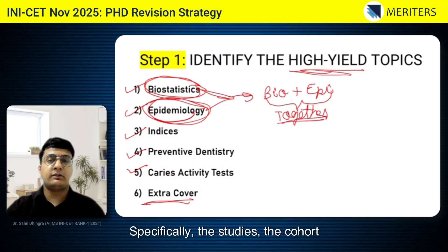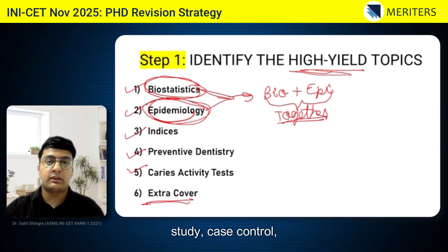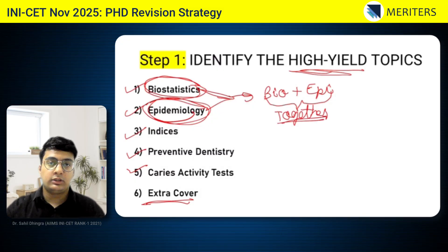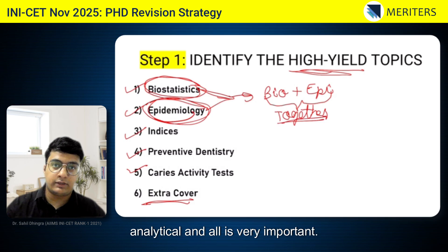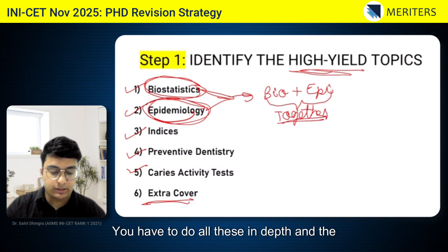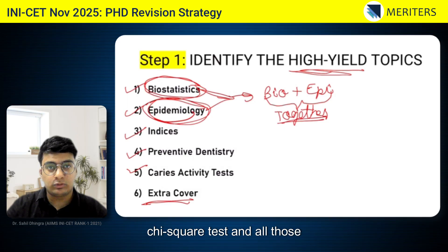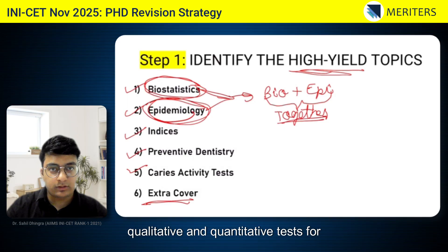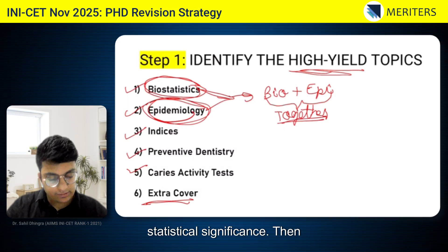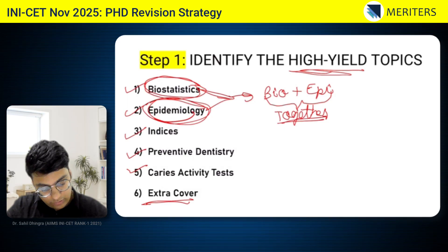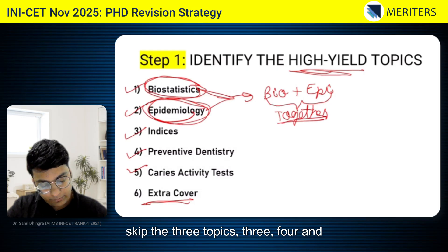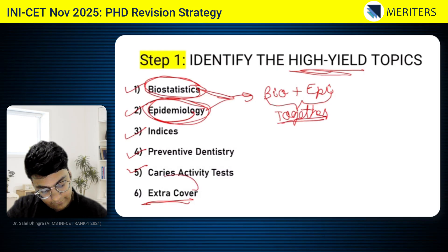Specifically, the studies — cohort study, case control, the classification of experimental and analytical — are very important. You have to do all these in depth, including the chi-square test and all qualitative and quantitative tests for statistical significance. Then skip topics three, four, and five, and move on to the extra cover.